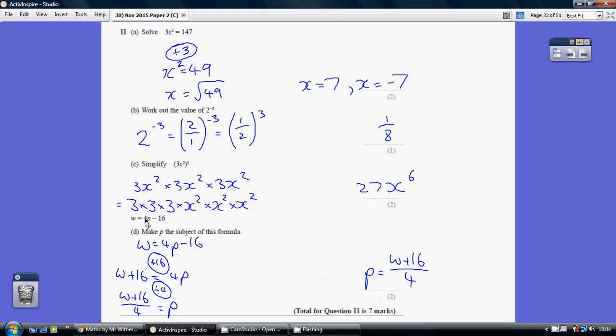So work your way towards the 4P bits. So start off with this term. How do we undo a minus 16? We choose to add 16 to both sides. So W add 16 equals 4P.